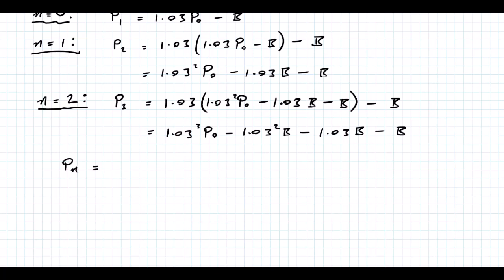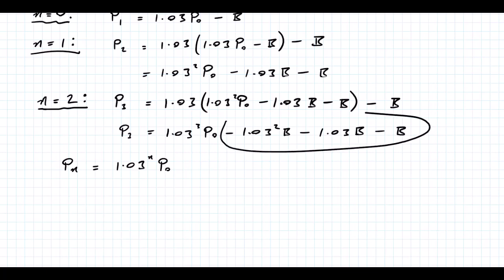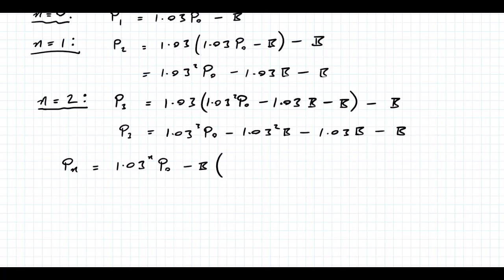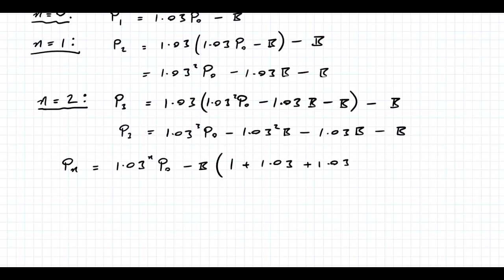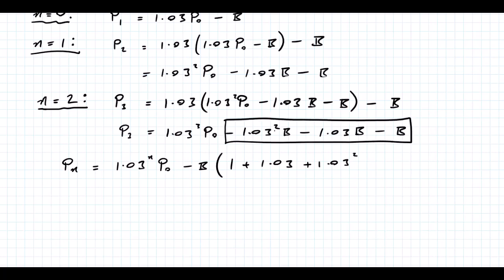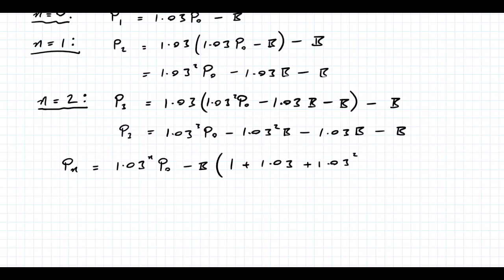We can write Pn as 1.03 to the power of n times P0. For the remaining terms, I'll factorize out minus B. Starting from the end, I get 1 plus 1.03 plus 1.03 squared, going up to 1.03 to the power of n minus 1, because we're looking at Pn — the highest power is always one less than n.